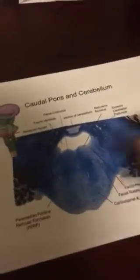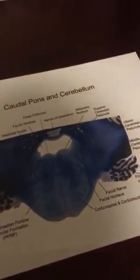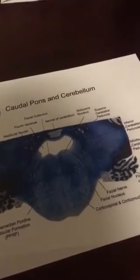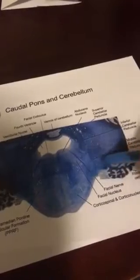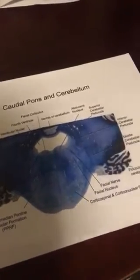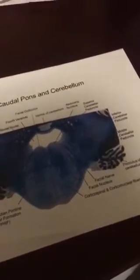Finally, when we get into our pons, we just have to be able to recognize our cerebellar peduncles entering the cerebellum. It's a little hard to see on histology, and in this one we have middle and then inferior and superior. That's something that's much more visible grossly, so make sure you're comfortable with that.